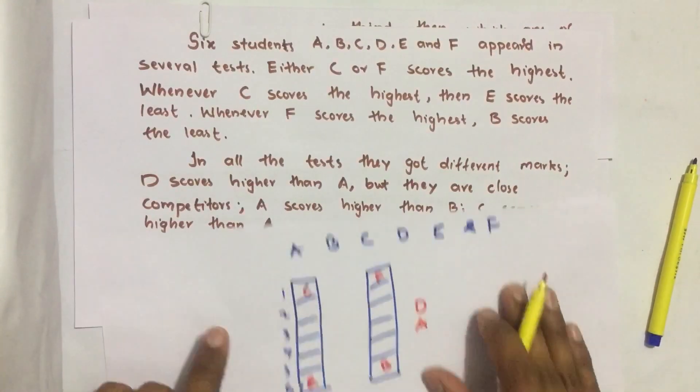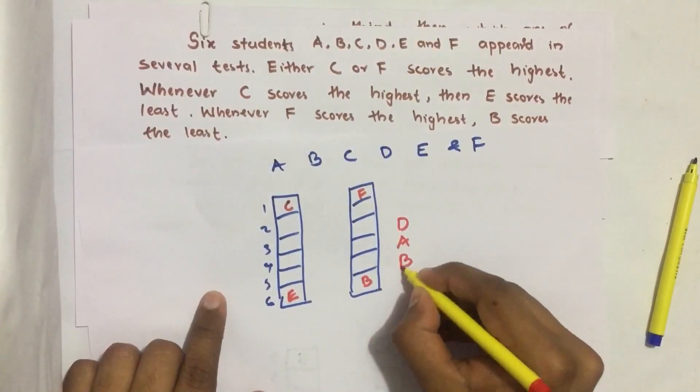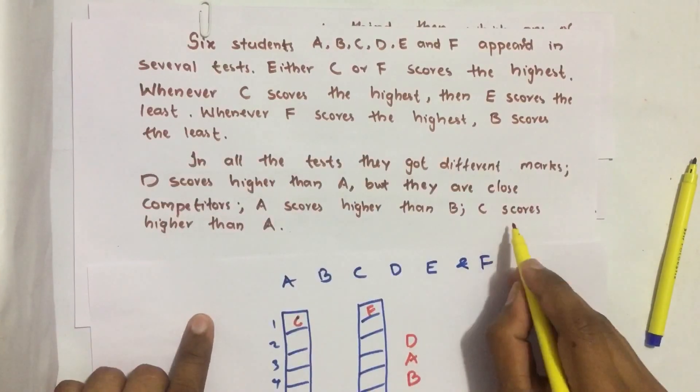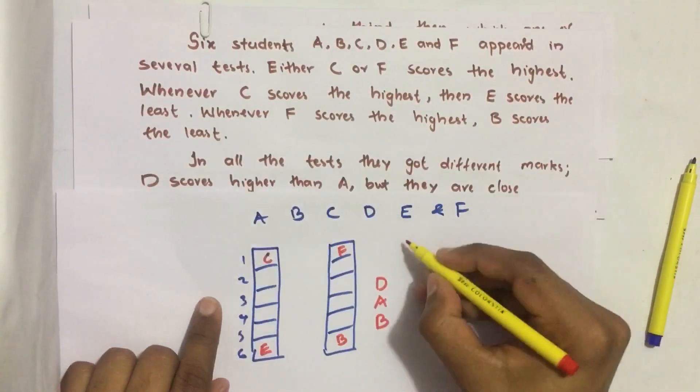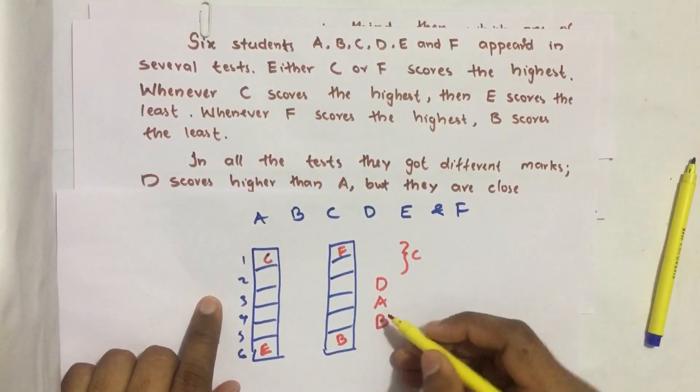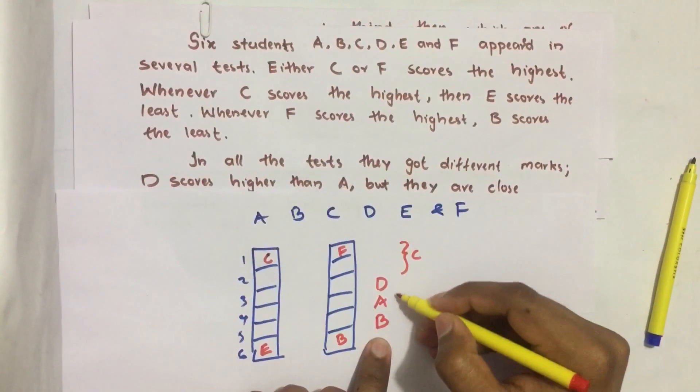A scores higher than B. B always will be below A. C scores higher than A. That means C scores somewhere here. It should be above A.